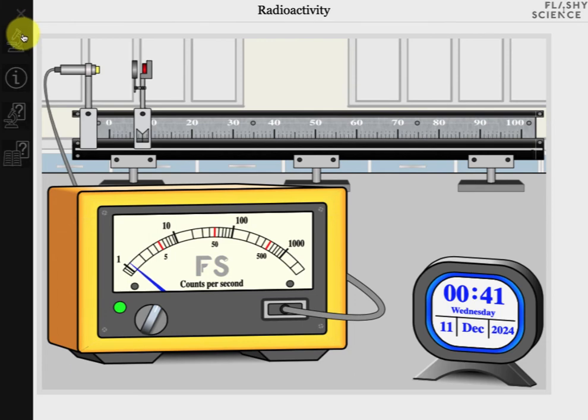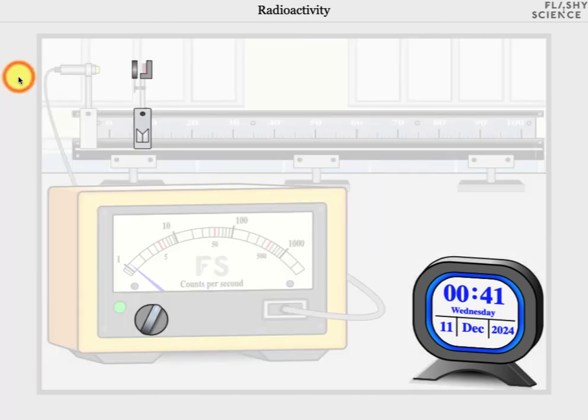The second icon returns you to the experiment when you're on a question screen. We'll come to those shortly. The third is the click information icon. Selecting this will highlight all of the areas on the screen that can be clicked to control the experiment.